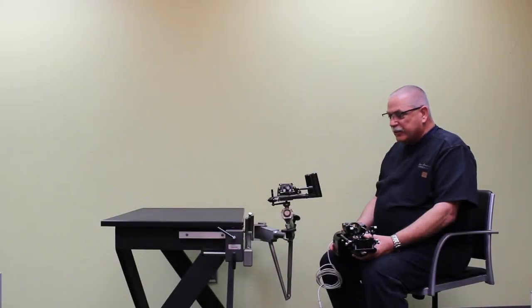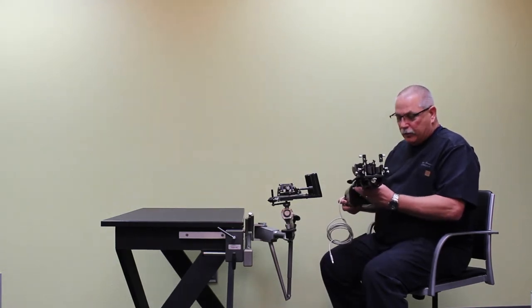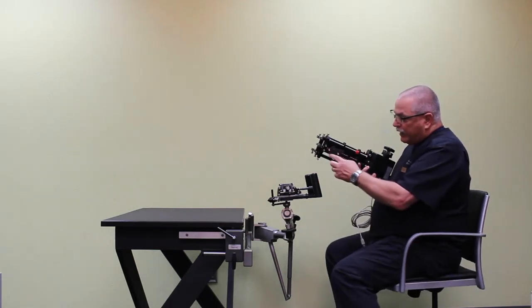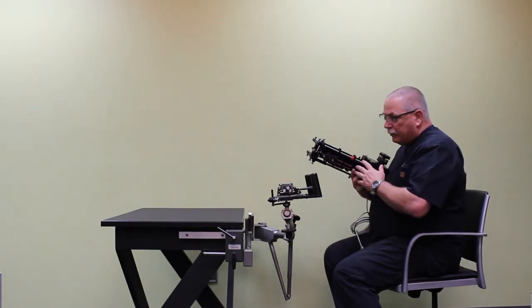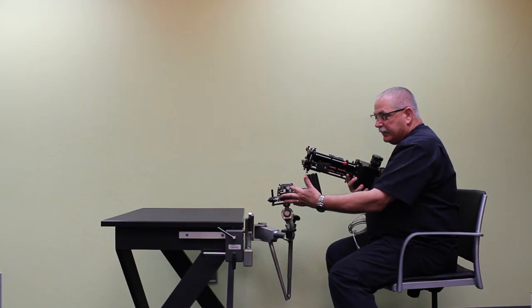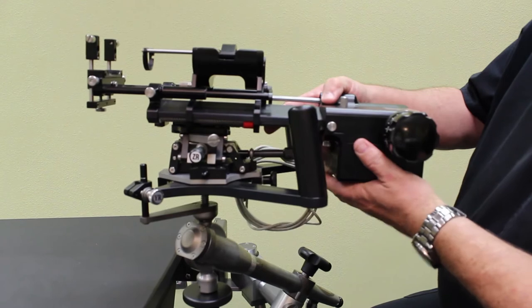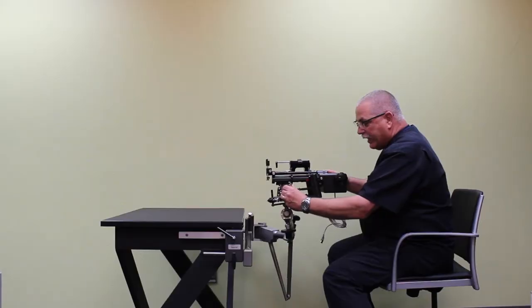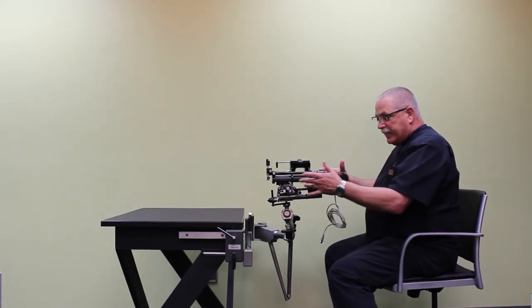Now that we've attached the stabilizer to the table, next we're going to attach your EX-3 stepper onto the stabilizer. You'll notice on the bottom of the stepper, there's a triangular shaped plate. There's also a plate on top of the stabilizer. I want to loosen this knob here on the side, slide the stepper onto the stabilizer, those two plates into each other, then tighten it back down with this. Now the stabilizer is attached to the stepper.